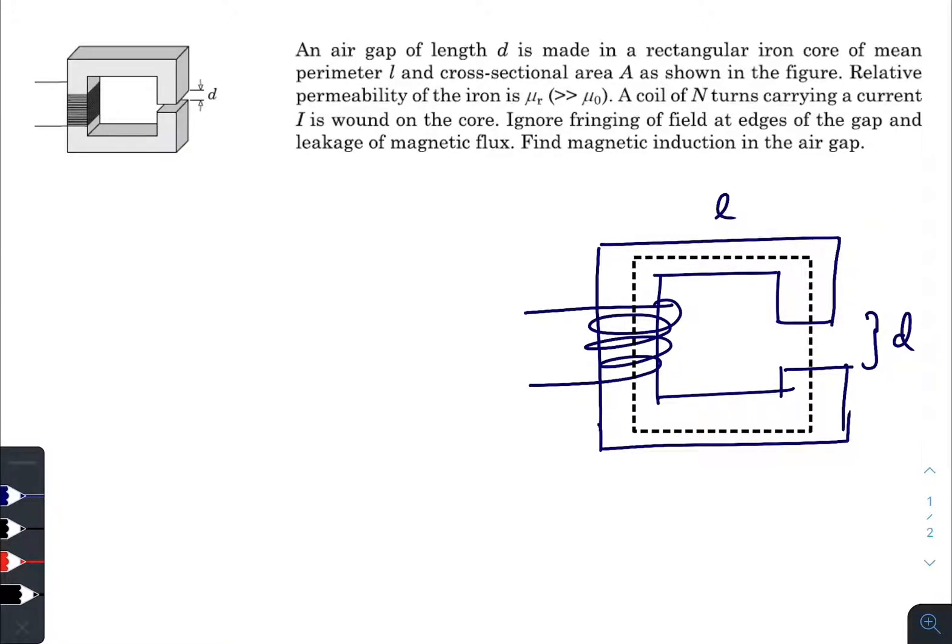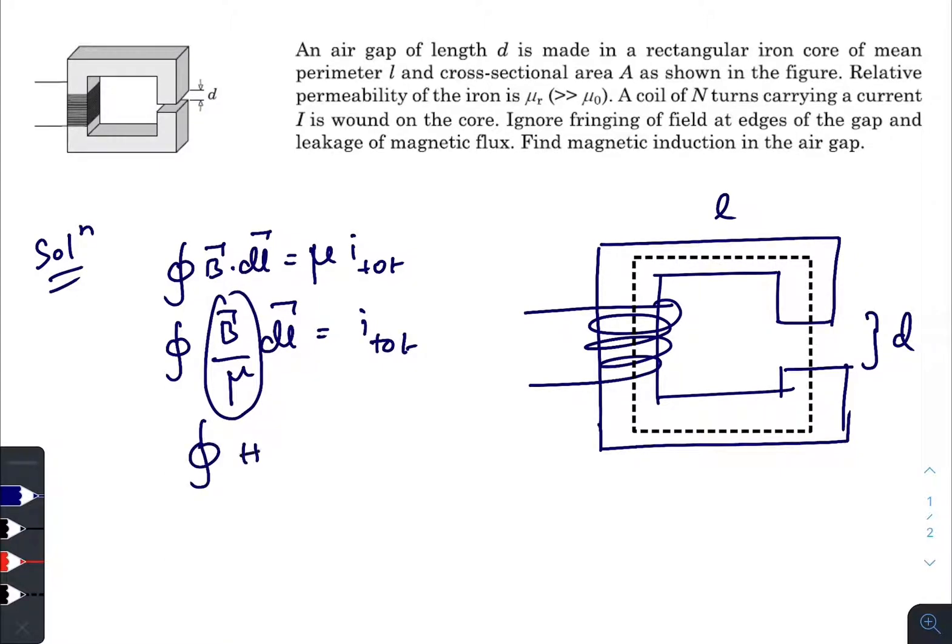And we know from Ampere's law that closed line integral of the magnetic field is mu times the total current. And if you modify this Ampere's law a little bit and if you write it like this, this one is H which is the magnetic field strength.